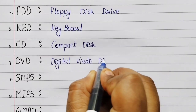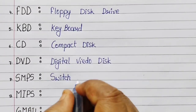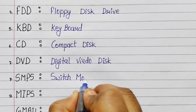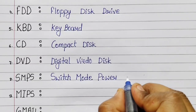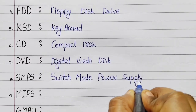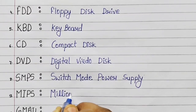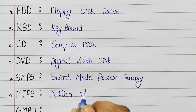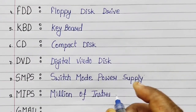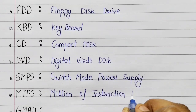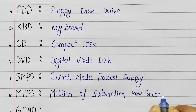Number 7: DVD - Digital Video Disk. Number 8: SMPS - Switch Mode Power Supply. Number 9: MIPS - Million Instructions Per Second.